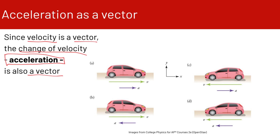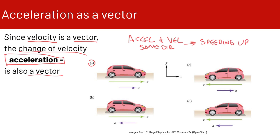We have some examples here of cars going in different directions. In A, we have a car going to the right, its velocity vector is going to the right, and its acceleration vector is going to the right, so the car is speeding up. When the acceleration vector and the velocity vector are pointing in the same direction, we are speeding up.